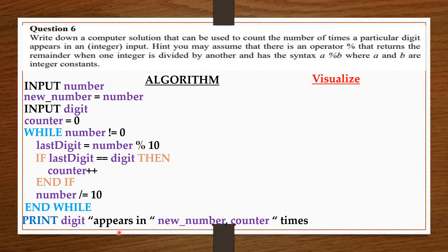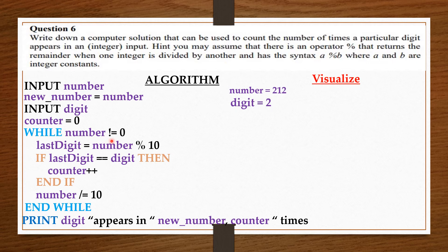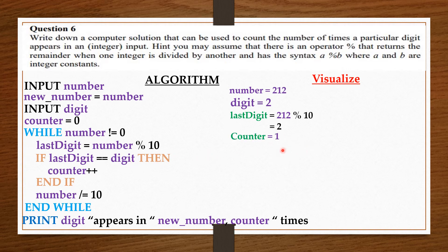Let's take the number to be 212, and the digit we want to count the number of times it appears in 212 is 2. So digit equals 2. Since 212 is not 0, we can enter the while loop. In the while loop, the last digit equals number modulus 10, so the last digit equals 212 modulus 10. The last digit in 212 is 2. We compare the last digit to digit — since 2 equals 2, we increase counter by 1. So counter moves from 0 to 1.